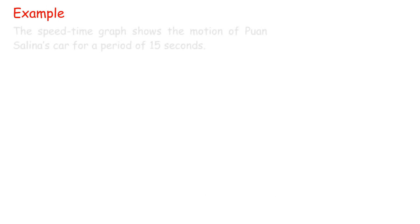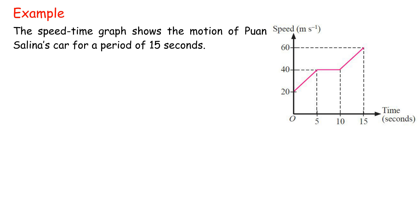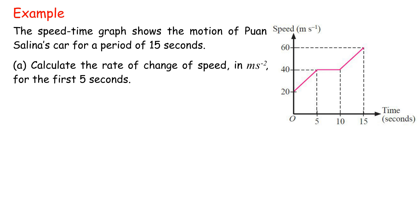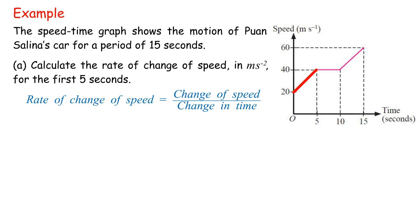Example: The speed-time graph shows the motion of Juan Salinas' car for a period of 15 seconds. A. Calculate the rate of change of speed in m/s² for the first 5 seconds. Rate of change of speed equals change of speed over change in time, equals (40 minus 20) m/s divided by (5 minus 0) s, equals 4 m/s².